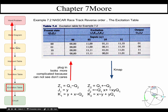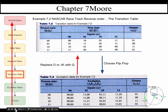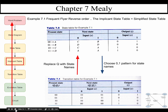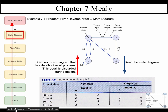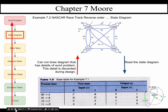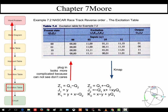Let me rapidly go through the rest of these so you can see the alternation: Mealy, Moore, Mealy, Moore, Mealy, Moore, Mealy, Moore, Mealy, Moore. Next up is our pass through the transition table.